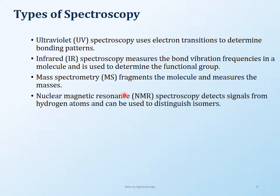We will start with the electromagnetic spectrum in this presentation and then begin infrared spectroscopy. Nuclear magnetic resonance is quite a large spectroscopy on its own and requires a lot more time. UV and IR are very closely related to each other, so we will talk about IR first and then go on to UV.